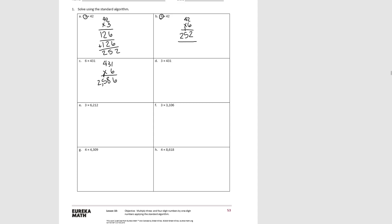Pause the video and try D. One times three is three. Three tens times three is nine tens. Four hundreds times three would be twelve hundreds. And we see here we multiplied by three, and in C we multiplied by six. So again, if we doubled this result, it should be the same as when we multiplied by six — and it is.